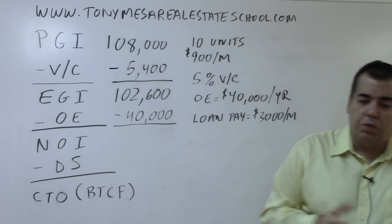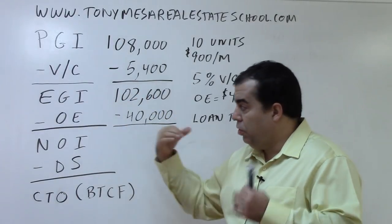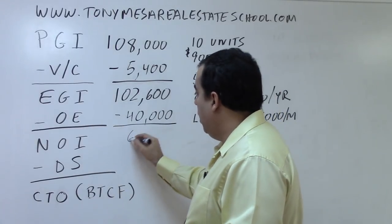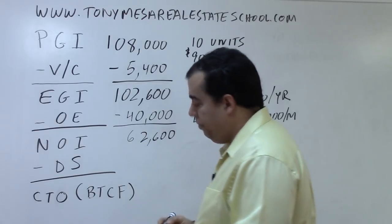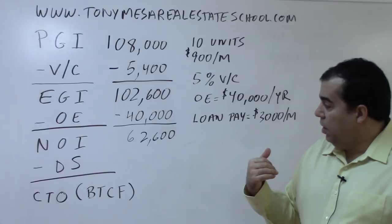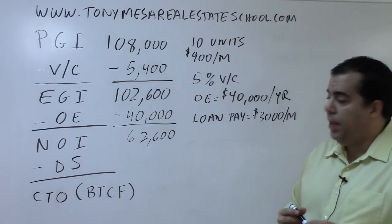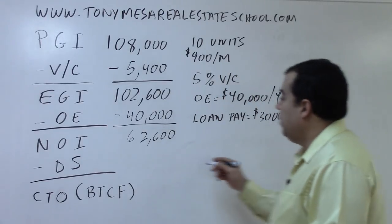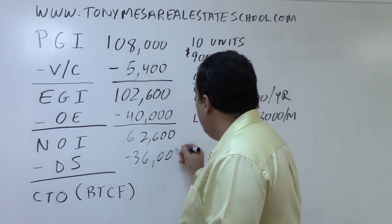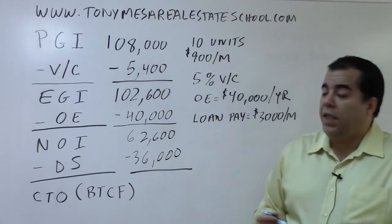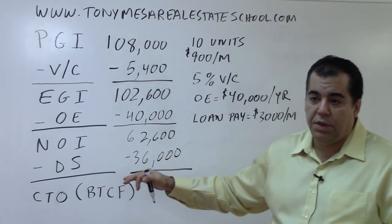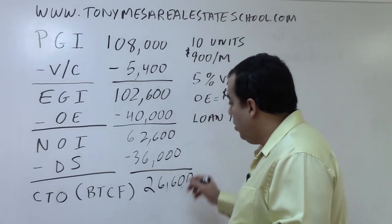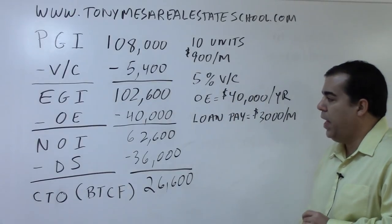We take the Effective Gross Income minus the Operating Expenses to get the Net Operating Income. In this example: $102,600 minus $40,000 gives an NOI of $62,600. You have a loan payment of $3,000 per month — times 12 months, that's $36,000 yearly debt service. Taking the NOI of $62,600 minus the debt service of $36,000 leaves you with $26,600 as your cash throw-off, or before-tax cash flow.